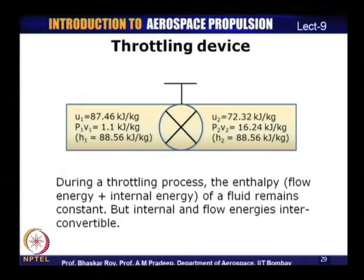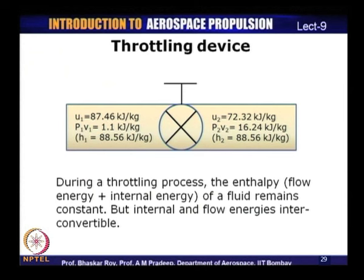As an illustration: at the inlet U1 might be, say, 87 kJ with some flow energy P1V1, giving total enthalpy H1. After the throttling device, U2 has reduced and P2V2 has correspondingly increased so that net enthalpy H2 remains the same. During a throttling process, enthalpy of a fluid remains constant, but internal energy and flow energy are interconvertible.